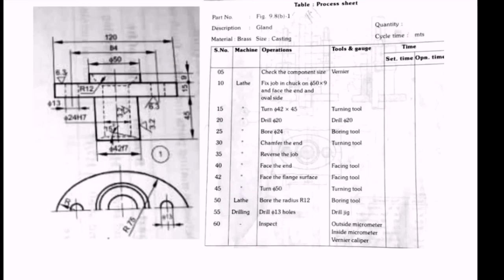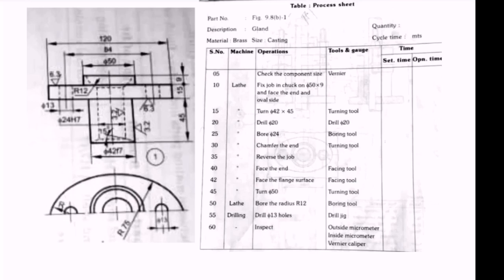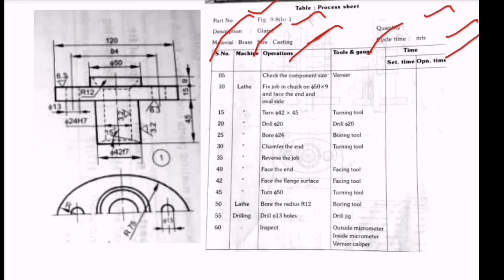Very important in the process sheet is maintaining the skeleton - providing information above the table including part number, description, material, quantity, and cycle time. Then drawing the table with serial number, machine, operations, tools and gauges, and time required. This skeleton is very important.